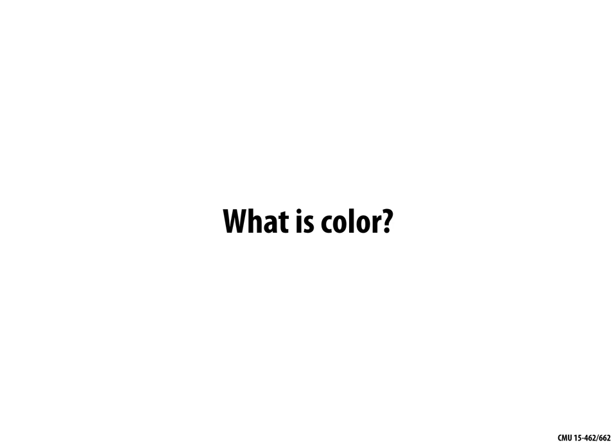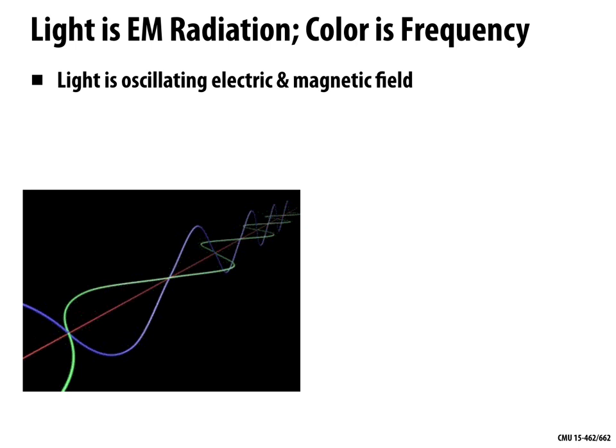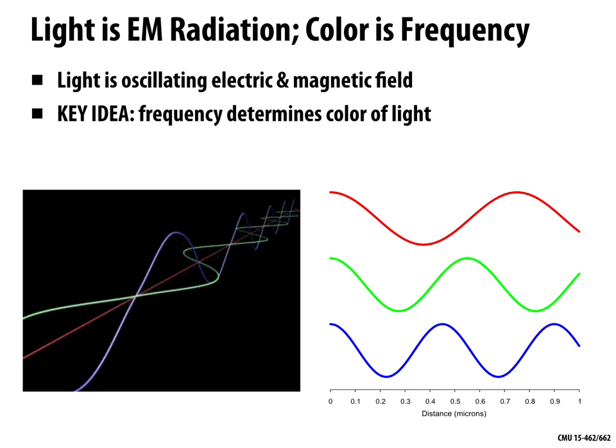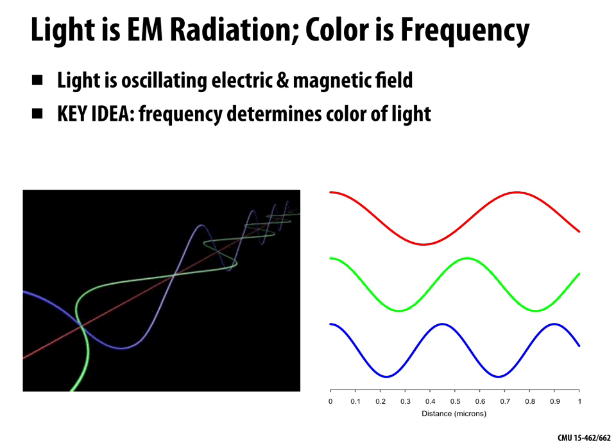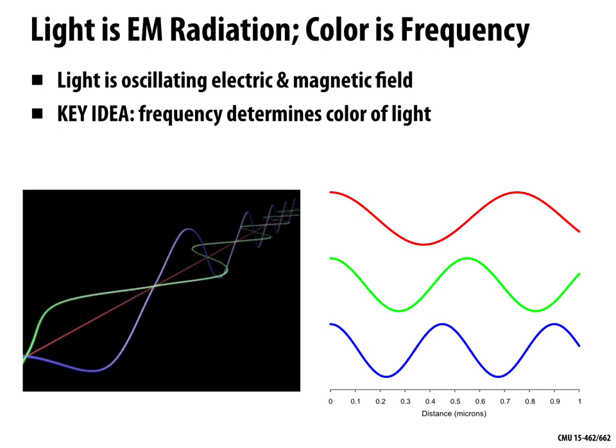So there are lots of good reasons to understand color in depth. But maybe the first question to ask is: what is color? Could you actually explain it to somebody who is blind? One really important way of thinking about color is from a physical perspective. Light is an oscillating electric and magnetic field. Color is just the frequency at which this field is oscillating — the frequency of this oscillating field determines the color of the light.